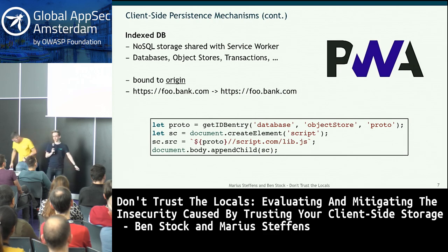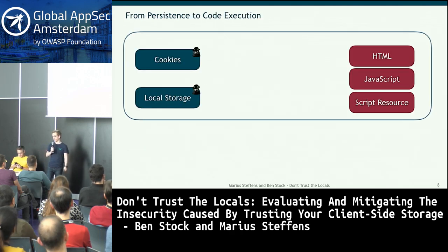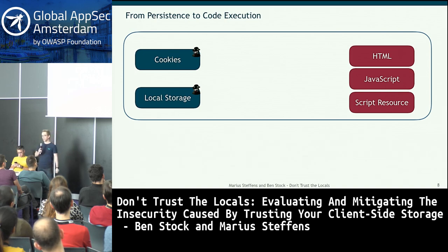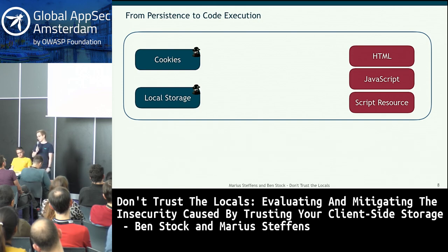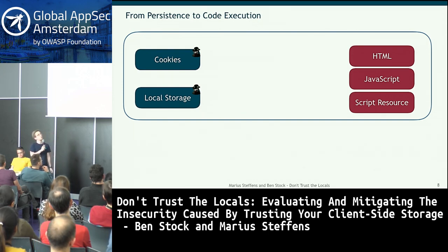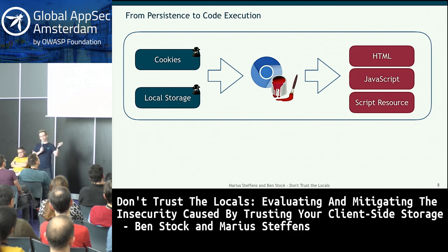Thanks Ben. Similar to linter-based approaches that find assignments to dangerous sinks, we do this dynamically. We built a patched Chromium with taint tracking — byte-level taint tracking of values originating from client-side stores that end up in code-executing sinks.